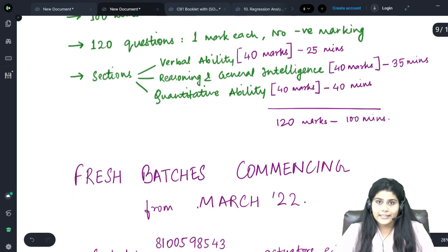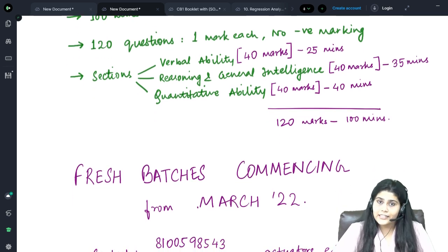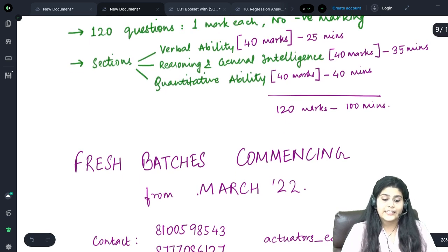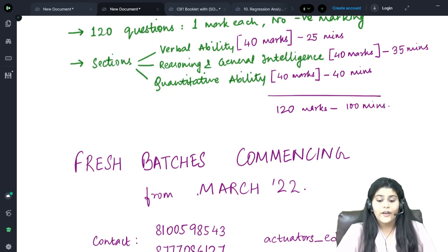The Verbal Ability section tests your English skills, which includes comprehension, communication, and basic grammar. It will consist of 40 marks and you will get 25 minutes to complete this section. The next section is the Reasoning and General Intelligence section, which is again for 40 marks, but this time you get 35 minutes to complete this section.